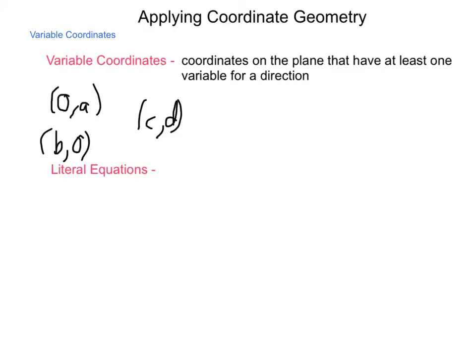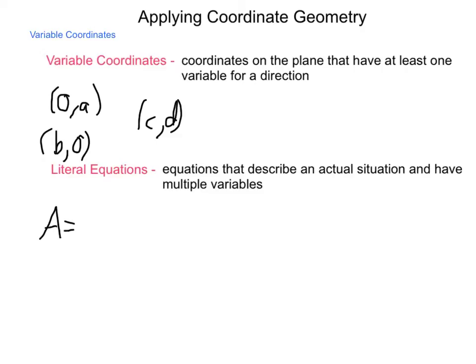Now, also in working with variable coordinates in geometry is the use of literal equations. Literal equations are equations that describe an actual situation and have multiple variables. A lot of times when we're looking at literal equations what we're looking at is situations such as area formulas. So the area of a rectangle is the length times the width, or perimeter is two times the sum of the length and the width. These are literal equations and we'd be able to solve one equation for a variable in terms of another variable. So we're going to make use of these two concepts as we go through this lesson.